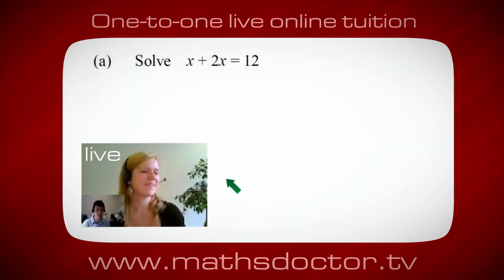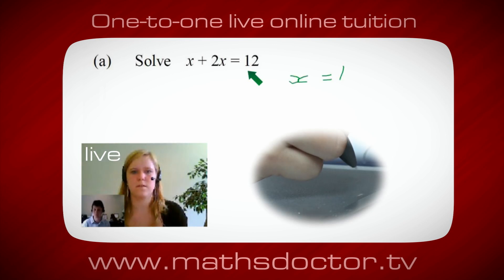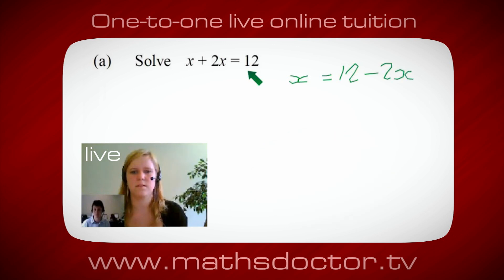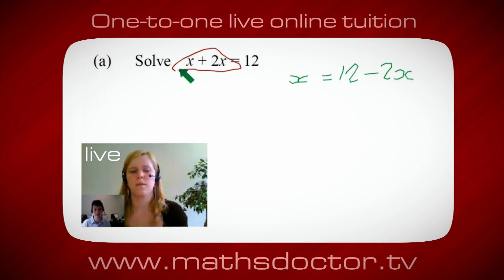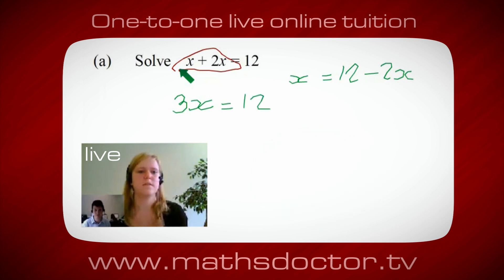Let's solve x plus 2x equals 12. What do you do first? We want to get all the x's together in one place — that gives 3x equals 12, so x equals 4.